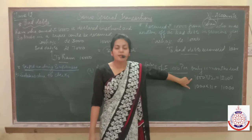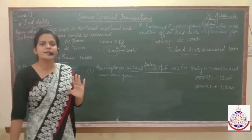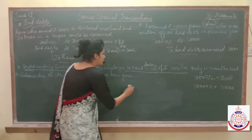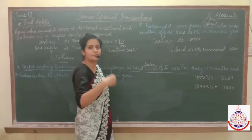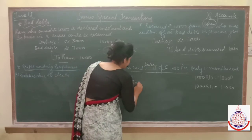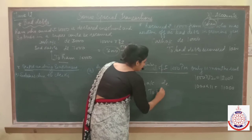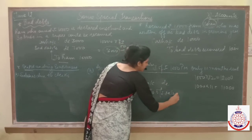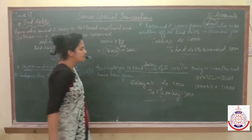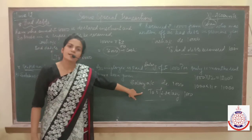We calculated: 12,000 we are paying; 11,000 we have paid; only 1,000 is left — 1 month's salary which we have not paid. So the entry will be: salary account debited to outstanding salary account, 1,000. We can't use salary to cash because this 1,000 has not been paid in cash yet. This 1,000 is outstanding, so we pass: salary debited to outstanding salary.